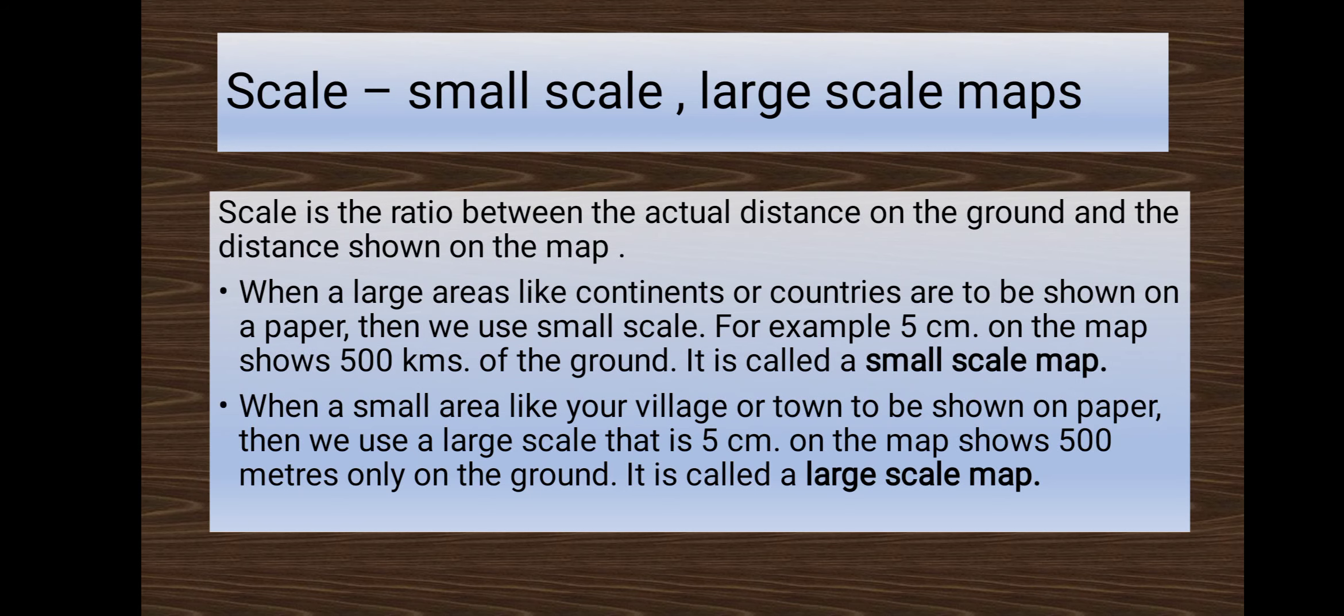When large areas like countries or continents are to be shown on paper, we use a small scale. For example, if 5 centimeters on the map shows 500 kilometers on the ground, it is called a small-scale map. When large areas are shown on paper, that is a small-scale map.